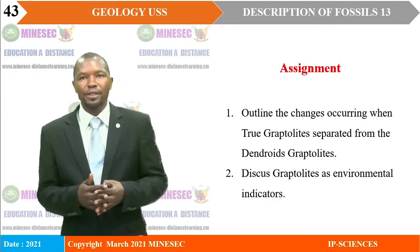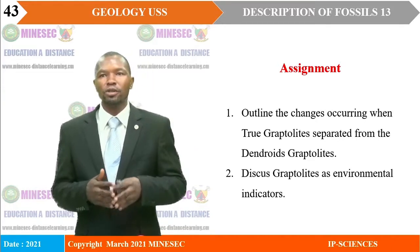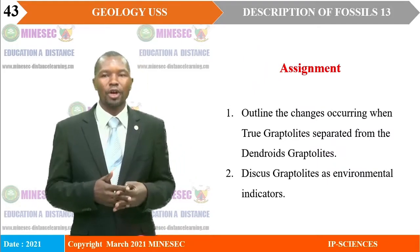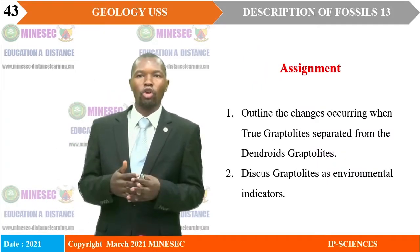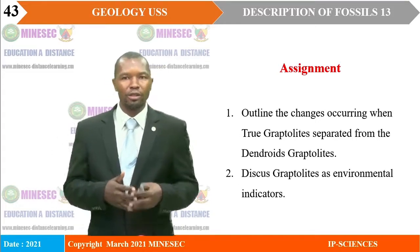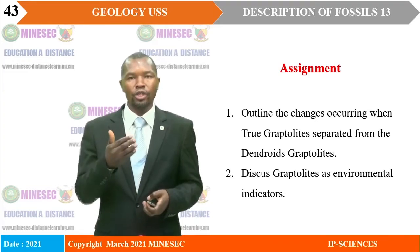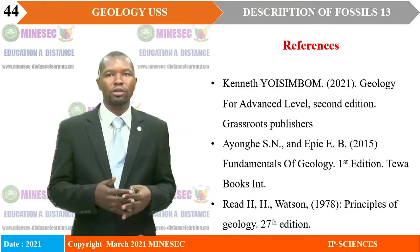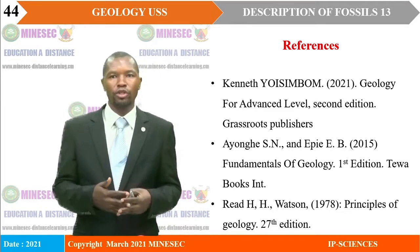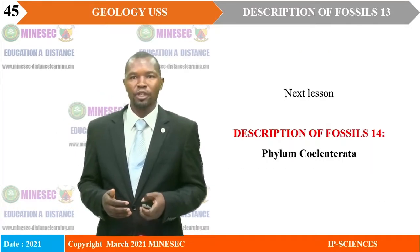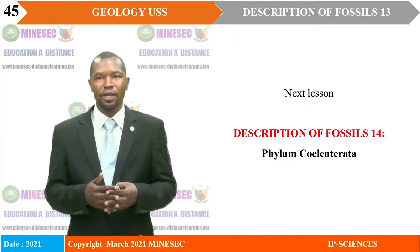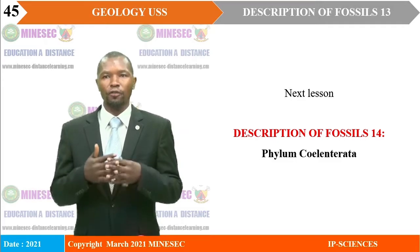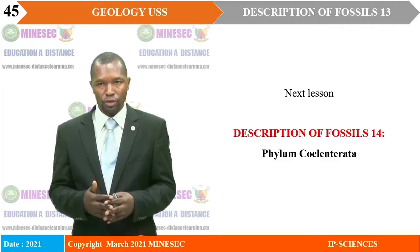As assignment, while at home, you shall: first, outline the changes occurring when true graptolites separated from the dendroid graptolites; and secondly, discuss graptolites as environmental indicators. The following texts can help you: Advanced Level Geology, Geology for Advanced Level, The Fundamentals of Geology, as well as The Principles of Geology. We have come to the end of our lesson. Our next lesson will be on description of fossils 14 — we shall focus on Phylum Coelenterata. See you in our next class!